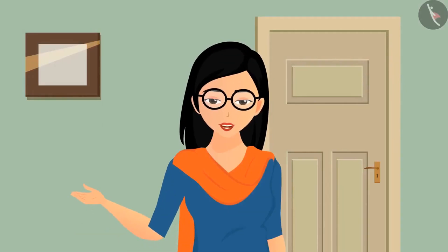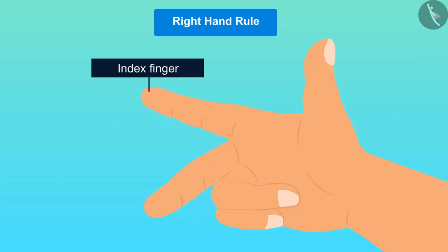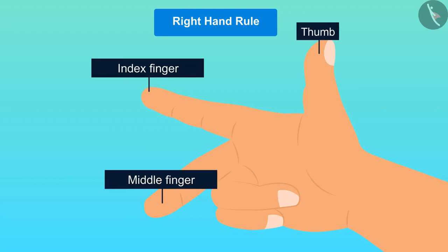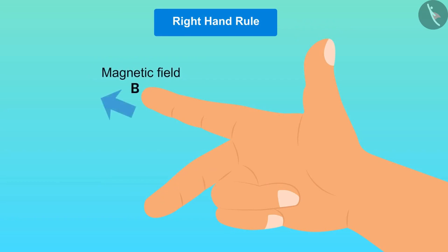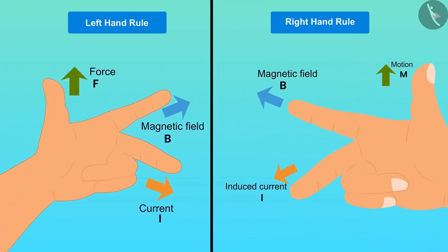To find the direction of this induced current, Fleming's right-hand rule is used. This rule states that if the index finger, middle finger, and thumb of the right hand are stretched so that all three are mutually perpendicular to each other, then the index finger represents the direction of magnetic field lines, the thumb represents the direction of motion, and the middle finger gives the direction of the induced current. Fleming's left-hand rule tells the direction of force due to electric current and magnetic field, while Fleming's right-hand rule gives the direction of induced current when a conductor is placed in a changing magnetic field.